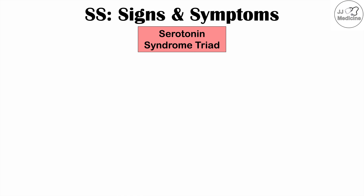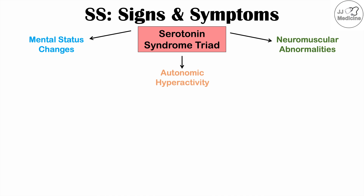The symptoms can be remembered using the serotonin syndrome triad and the mnemonic MAN: M for mental status changes, A for autonomic hyperactivity, and N for neuromuscular abnormalities. These are the three main categories of symptoms that occur with serotonin syndrome.